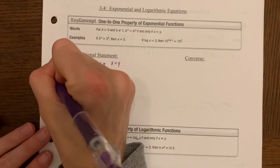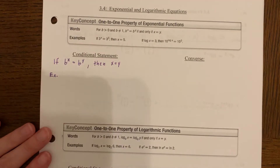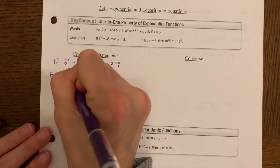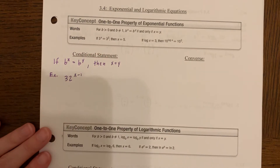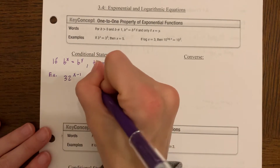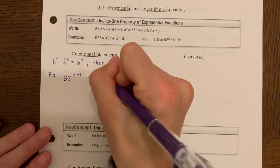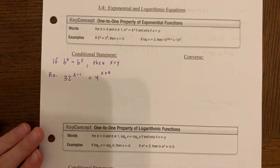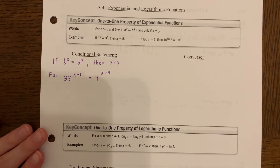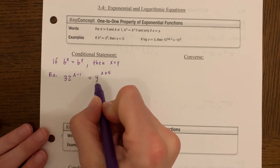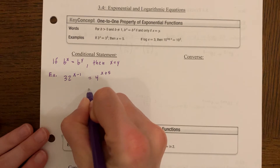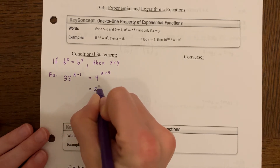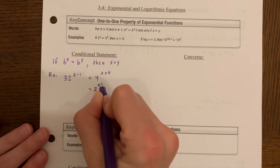Here's an example: 32 to the power (X minus 1) equals 4 to the power (X plus 5). Notice we have two exponents set equal to each other. In order to solve for X, I need to rewrite the exponents to have the same base. I know 4 can be written as 2 to the second power.